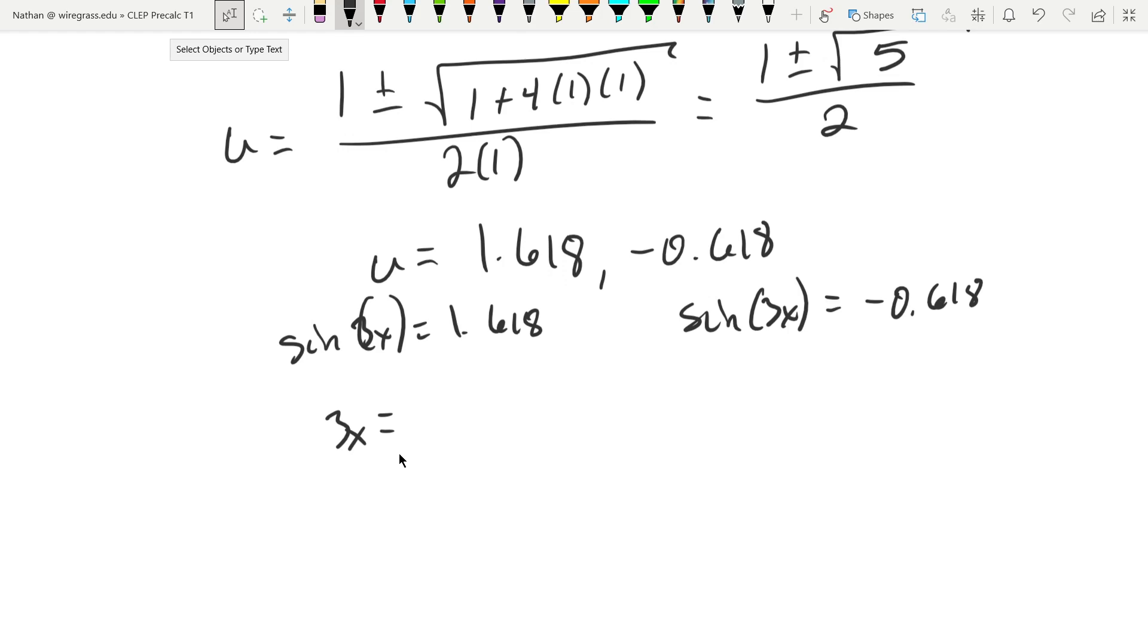Arc sine can only allow values between negative 1 and 1. It's the inverse of sine, and the highest value sine of x attains is 1, the lowest is negative 1. So this is actually not possible, there's no solution for this case. But the other one is going to be possible because that is between negative 1 and 1.